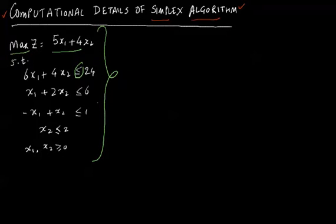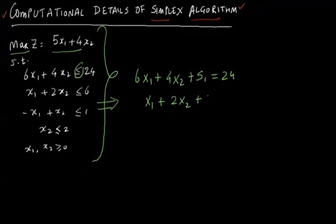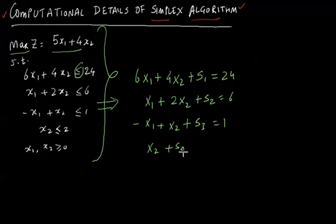So the constraints would now become 6x1 plus 4x2, I will be adding one slack variable, making it equal to 24. x1 plus 2x2, one more slack variable makes it equal to 6. Minus x1 plus x2 plus s3 makes it equal to 1. x2 plus s4 makes it equal to 2.